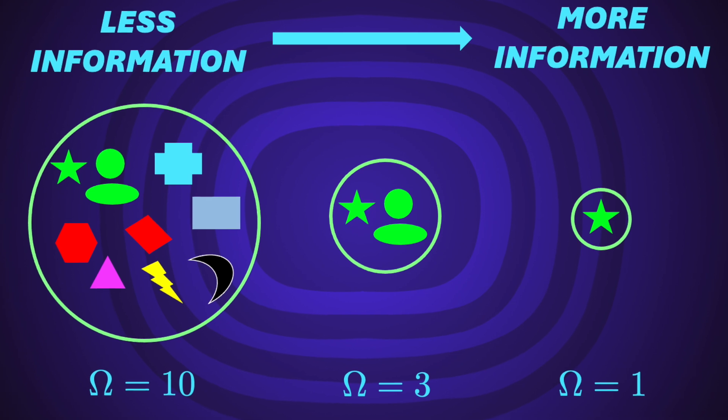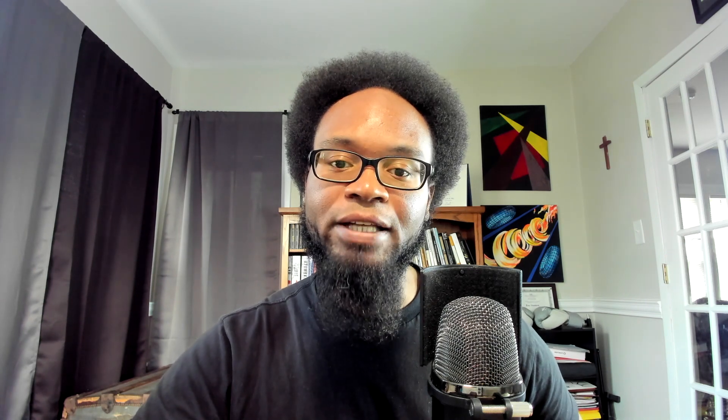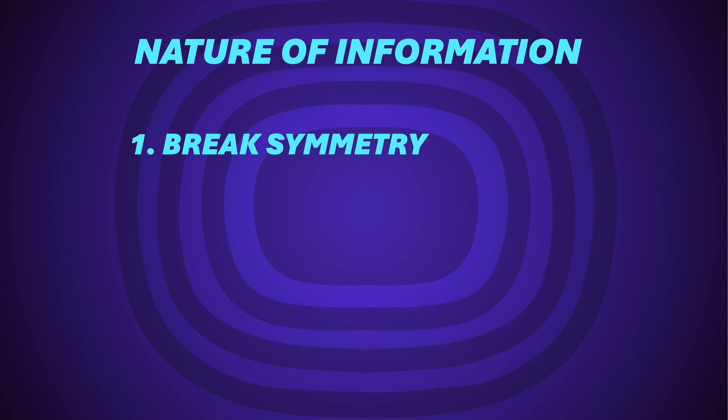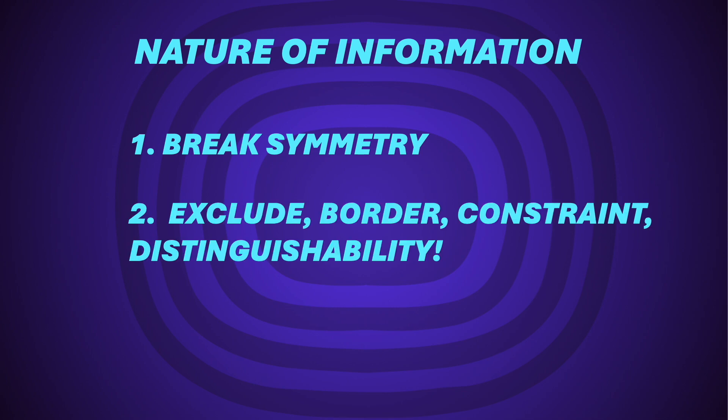Boltzmann's entropy quantifies the amount of symmetry associated with macro data — that is called the multiplicity. In our example, the first information Alice gave had a multiplicity of 10, then 3, then 1. With each additional high-resolution piece of information, Bob's probability of correctly picking the right object increases. When she gives information for which only one object is consistent, he has perfect certainty. In quantum mechanics, we call such a state a pure state, which has zero entropy or zero uncertainty.